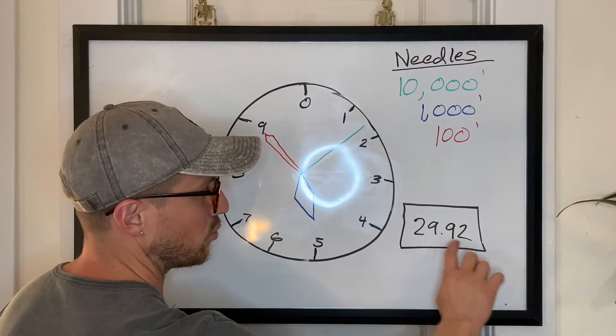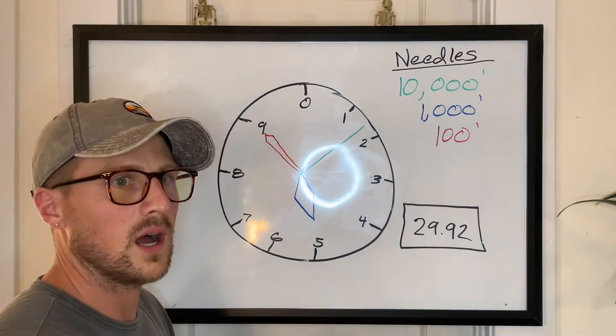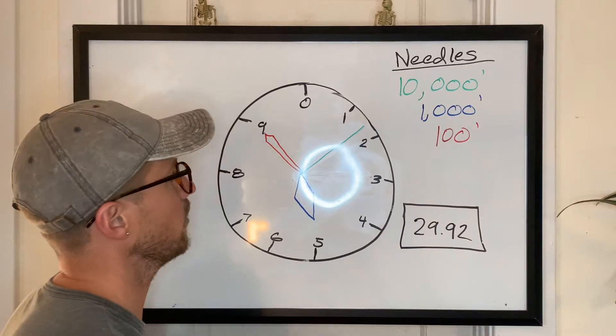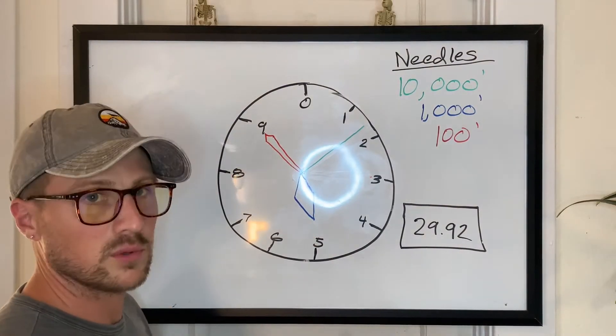The standard is 29.92 inches of mercury. That's what we have in here for this example. But again check out that other video if you want to learn more about how the altimeter insides work. I think it's really helpful.